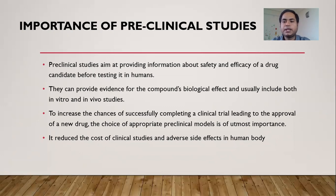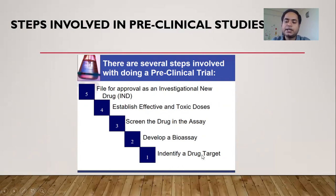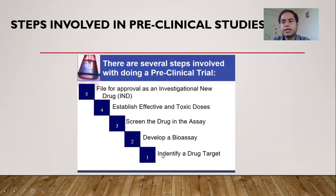There are some steps involved in performing a pre-clinical study: identify a drug target, the development of a bioassay, screen the drug in the assay, establish effective and toxic doses, and file for approval as an investigational new drug (IND). In the first step, we identify a drug target. There are two strategies adopted by scientists for drug target identification: drug target deconvolution and target discovery process. An extensive literature survey is needed to identify a drug target.